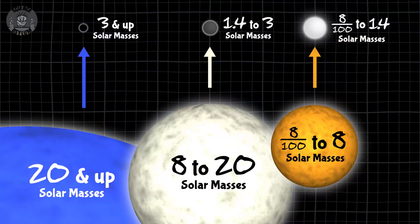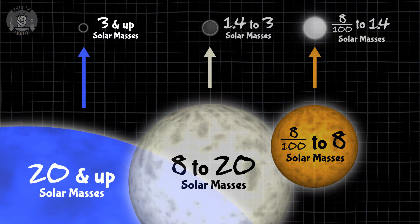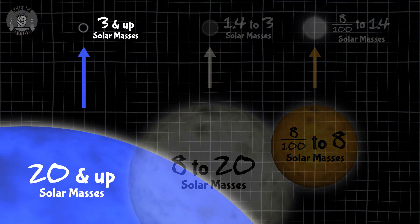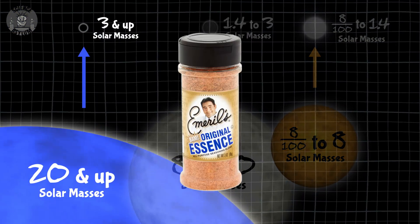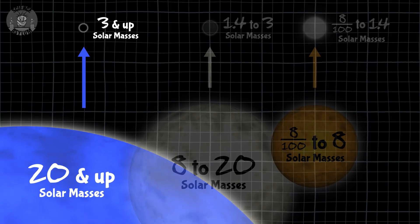Hey Crazies, when you first learn about black holes, it seems like they're pretty easy to make. You just put at least three times the mass of the Sun in a small enough space and bam, you've got yourself a black hole. But there are some hidden obstacles in this process.